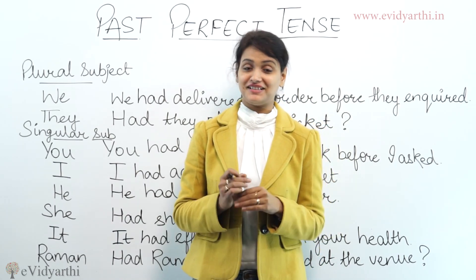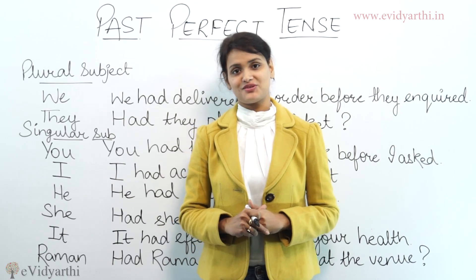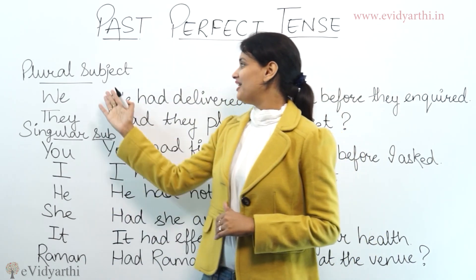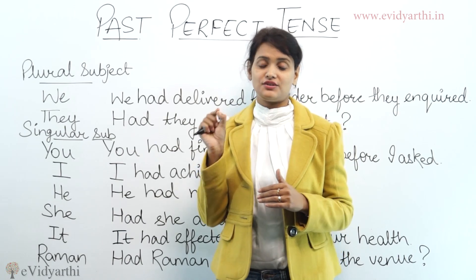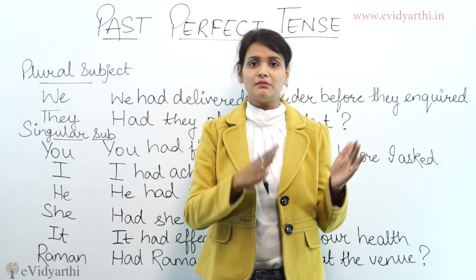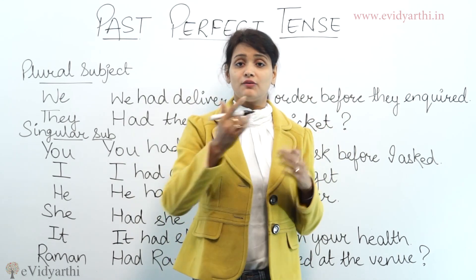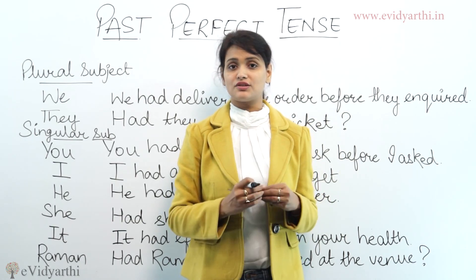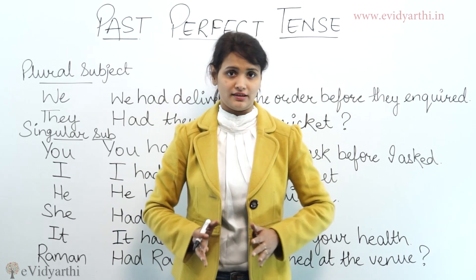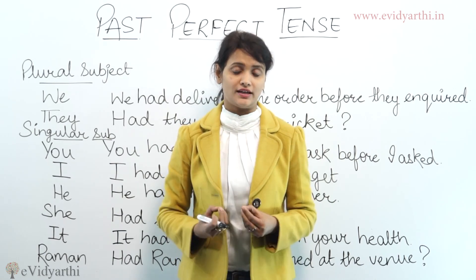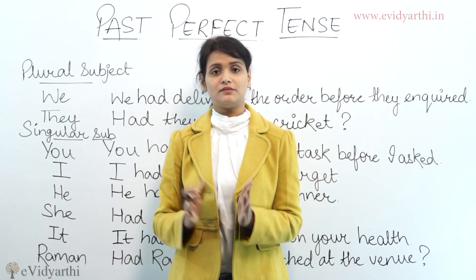Past perfect tense has a little grammatical complexity, but when we learn the grammar rules, it will be easier to understand. There is a very minor difference between simple past and past perfect. Something which happened recently in the past is always in simple past, but something which happened more earlier depends on the situation. It becomes a sense that helps you understand which situation calls for simple past and which calls for past perfect.